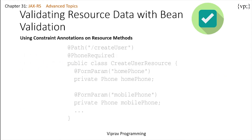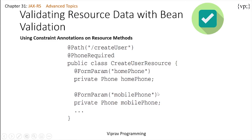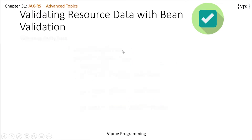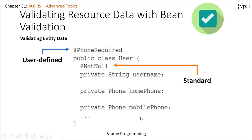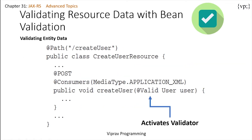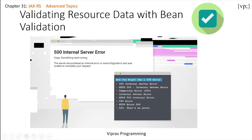Constraints can also be applied at the resource class level. This example has a constraint that checks if the client has entered either a home phone number or a cell phone number — at least one must be given using @PhoneRequired. To validate entity data, this entity class contains both user-defined and standard constraints. The user-defined one is the one we created, and the standard one tells that the username cannot be null. The @Valid annotation ensures that the entity class is validated at runtime, activating all the validators.